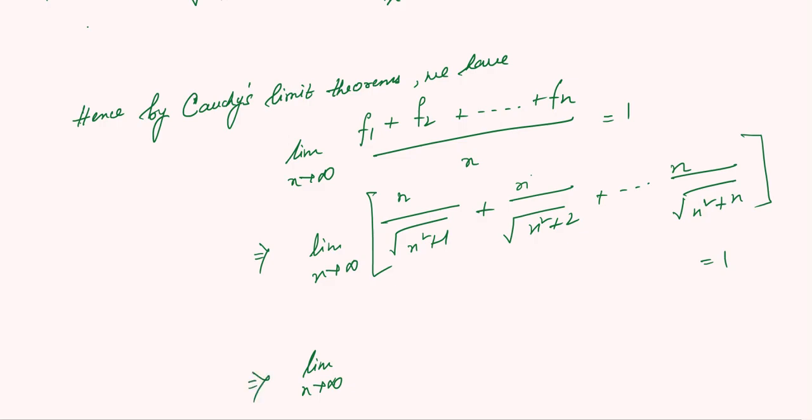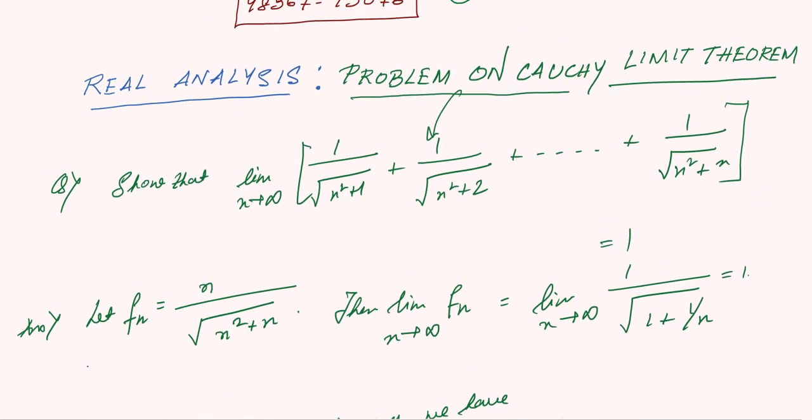This implies [1 by root of (n squared plus 1) plus 1 by root of (n squared plus 2) plus dot dot dot plus 1 by root of (n squared plus n)] and this is equal to 1, which is our desired result.